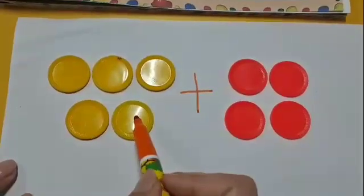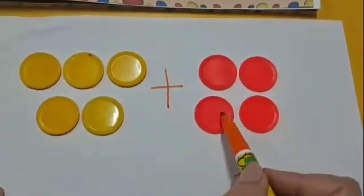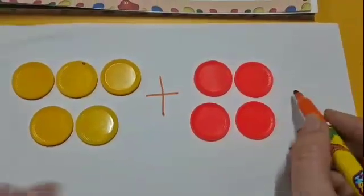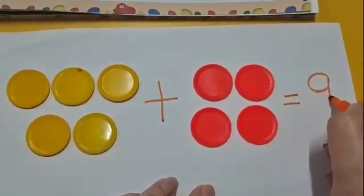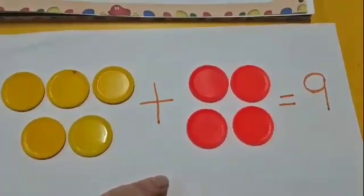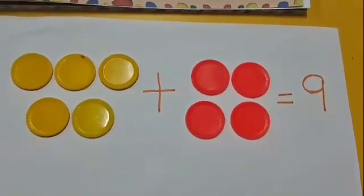Five, six, seven, eight, nine. So now I have nine counters. This is addition.